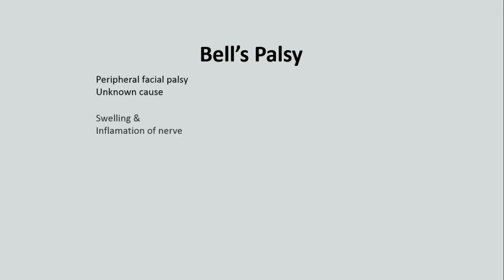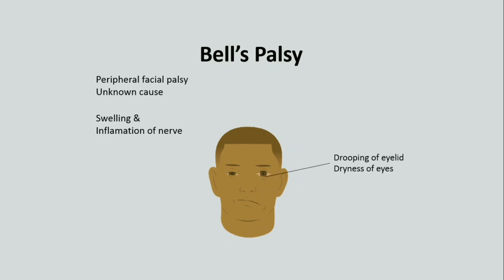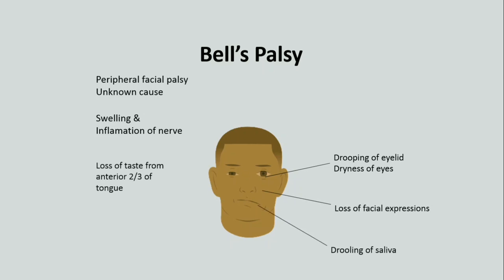Bell's palsy is a peripheral facial paralysis of unknown cause. It can occur due to inflammation and swelling of the nerve. Clinically, there is drooping of the eyelid causing dryness of the eyes, loss of facial expressions, and drooling of saliva. There is also loss of taste sensation from the anterior two-thirds of the tongue.